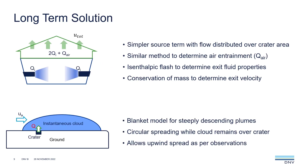To preview a couple of things we're working on for the next release of FAST and SFETI: the first is a simpler source term conceptually. It will be similar to the one discussed earlier, but with the flow distributed over the full area of the crater. It uses a similar method to determine air entrainment and an isenthalpic flash to determine exit properties at the crater boundary — such as density and solid fraction — then uses conservation of mass to determine the exit velocity. As we're using a larger area, this should be somewhat lower than what we're currently predicting.